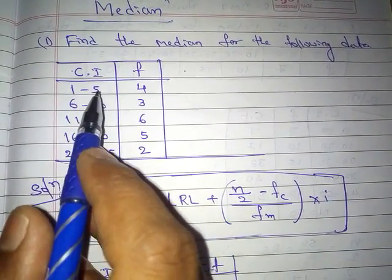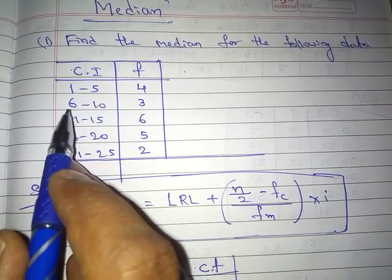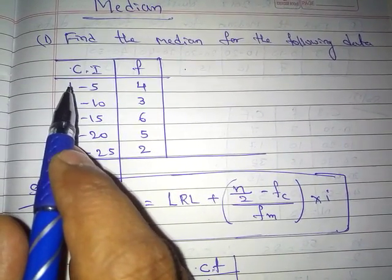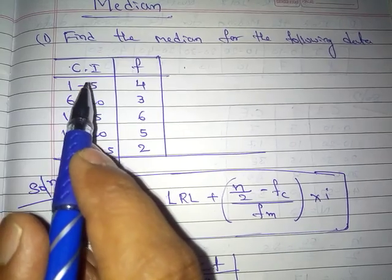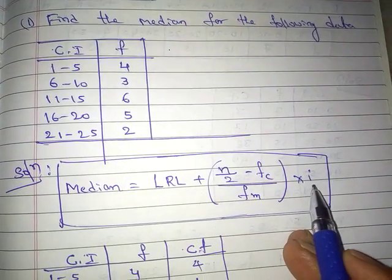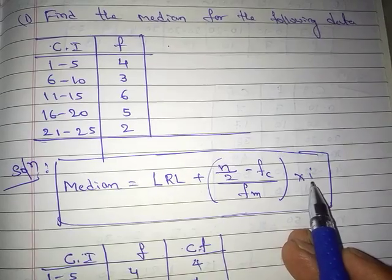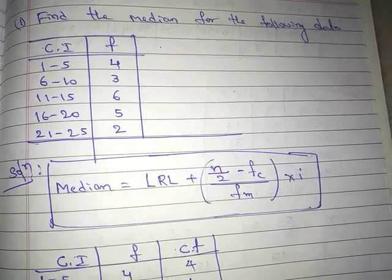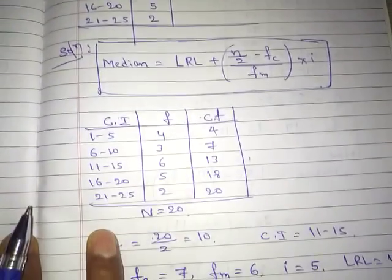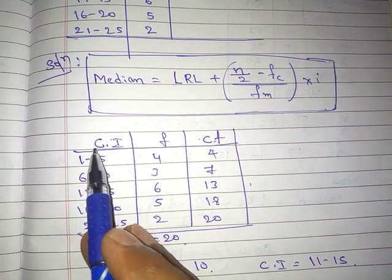Here, the class interval range i is 5. For example, 1 to 5 means the range is 5, and 6 to 10 — counting 1, 2, 3, 4, 5 — the range is also 5. So i equals 5. Now let us first write out the table with the given data: class interval and the corresponding frequencies.